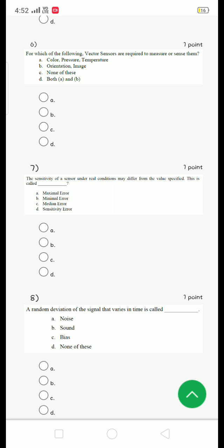Sixth question: which of the following vector sensors are required to measure or sense them? The answer for the sixth question is option B, orientation comma image.